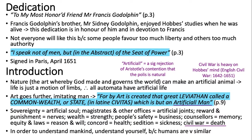So it begins with the dedication. He says 'to my most honoured friend, Mr Francis Godolphin.' Francis Godolphin's brother Sidney Godolphin enjoyed Hobbes' studies when he was alive, and this dedication is in honour of him and in devotion to Francis. He says that not everyone will like what he's about to say because some people favour too much liberty and others too much authority — he's setting himself up almost as a centrist. He says 'I speak not of men, but in the abstract of the seat of power.' And he signs it off in Paris, April 1651.